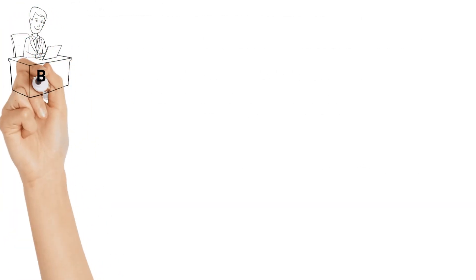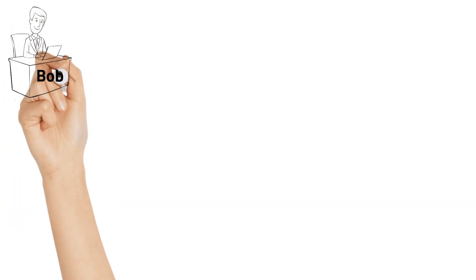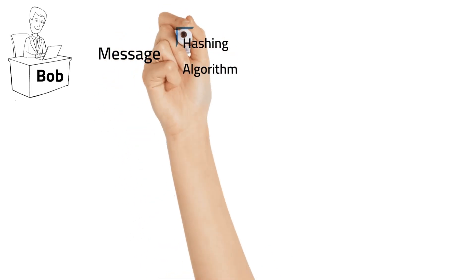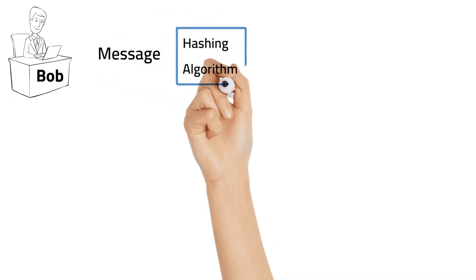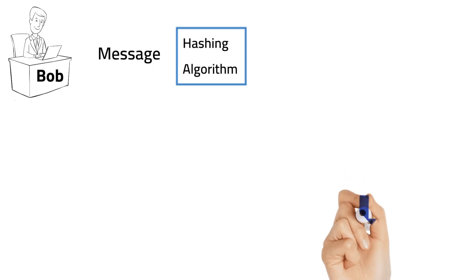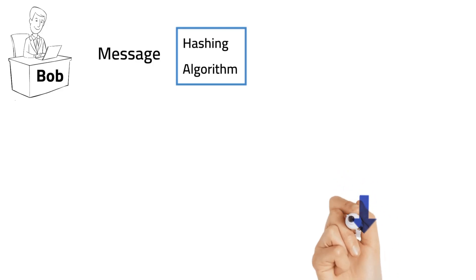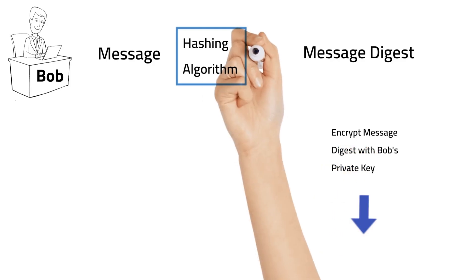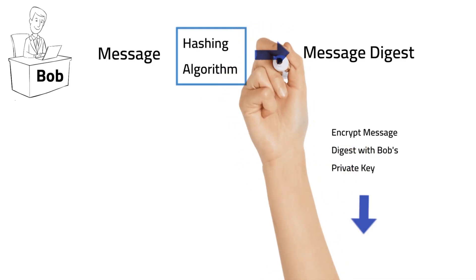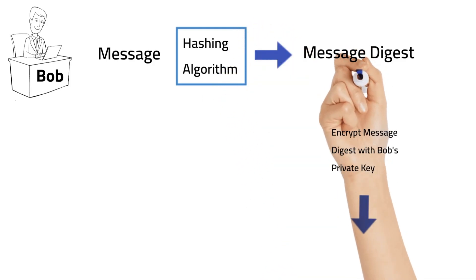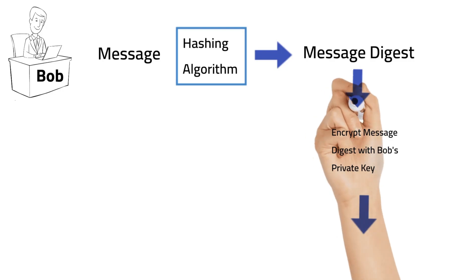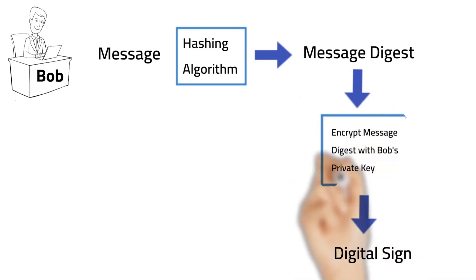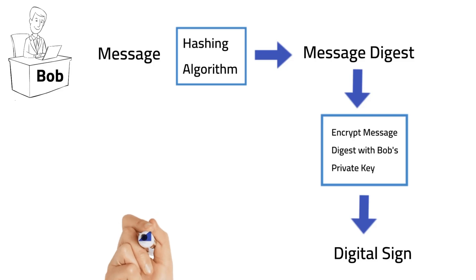PGP uses digital signatures. In our example, Bob wants to send a message to Tom. First, he generates a message digest from the plain text using a hashing algorithm. Once he has the message digest, he encrypts it with Bob's private key to produce a digital signature.